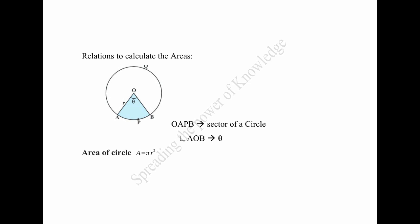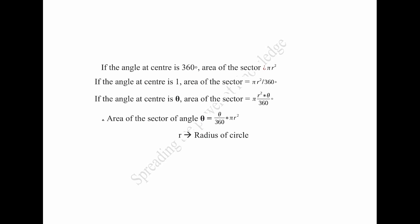Now, we have to find some relations to calculate their areas. Let OAPB be a sector of a circle with centre O and radius R. Let the degree measure of AOB be theta. Then, we know the area of circle is pi R square. From the picture, we can consider the circular region to be a sector forming an angle of 360 degrees. When degree measure of angle at the centre is 360 degrees, area of the sector equal to pi R square.